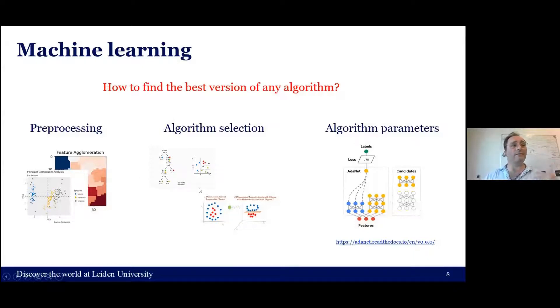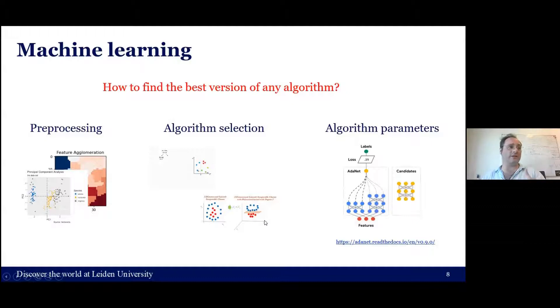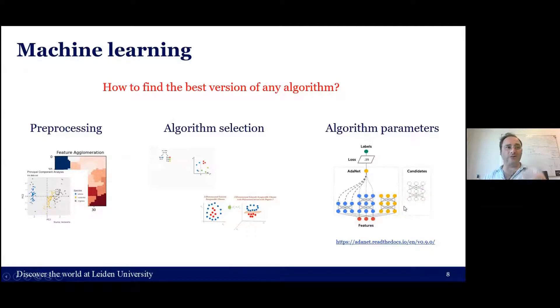what type of algorithms to use — for example random forest or support vector machine — and what type of parameters to use in the algorithm. These are the three main things.